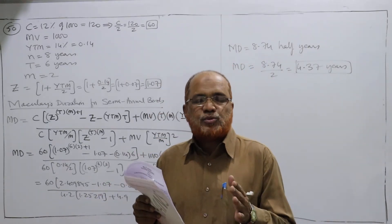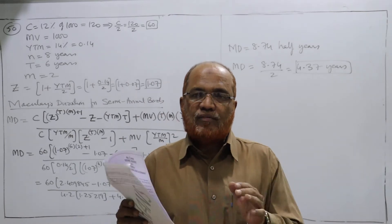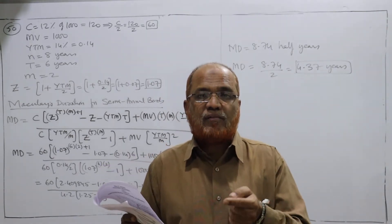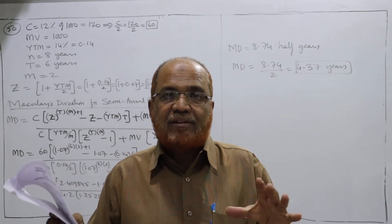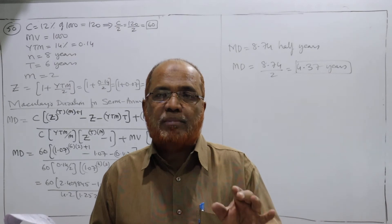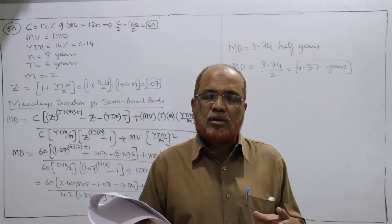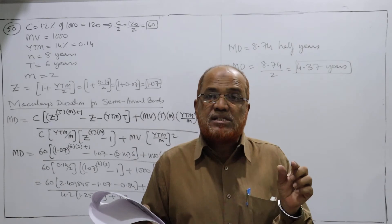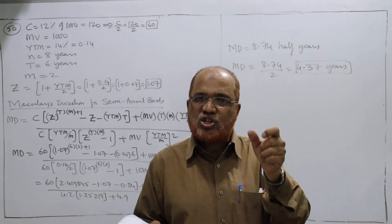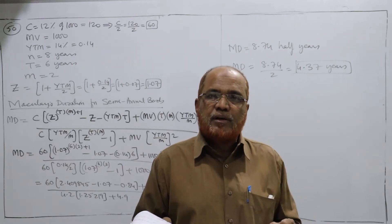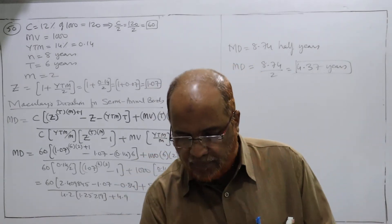In all the previous problems, we calculated duration for annual bonds, not for semi-annual bonds. This is the first problem where we have a semi-annual bond and we have to find the duration. Macaulay has given one formula — a lengthy formula — for calculating duration if the bond is semi-annual. This formula is tedious and time-consuming. It will be applied only when the bond is semi-annual. For annual bonds, we prepare the table with year, cash flow, PV factors, and product columns.